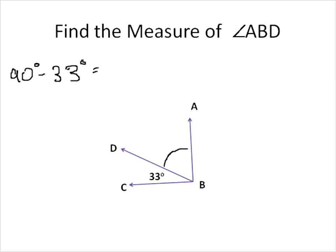Alright, so you know that the full amount from all the way down here is 90 degrees. We know this little small sliver here is 33 degrees. So if we take 90 degrees and we subtract 33, we'll find that the remaining amount, 57 degrees, is that angle ABD.